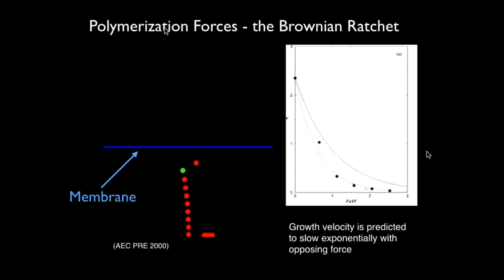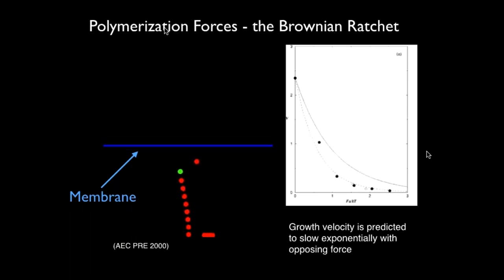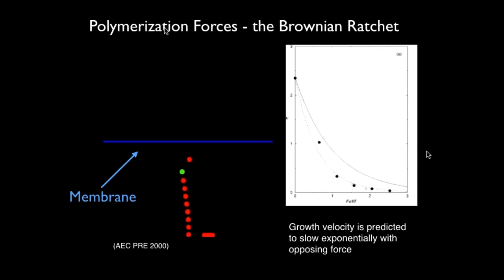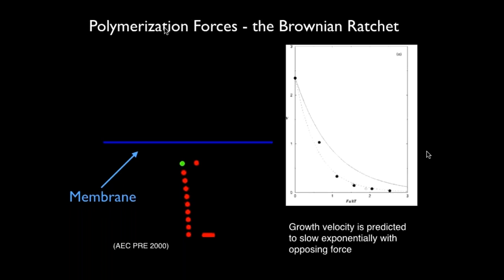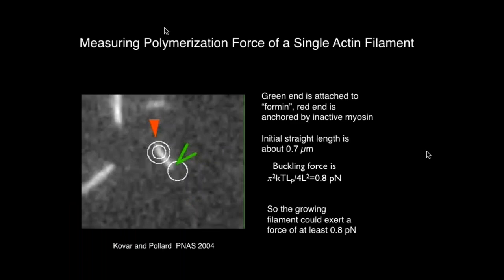The Brownian ratchet model predicts that if you push down on the membrane very hard, it will sit on top of the filament and not allow new subunits to come in, stopping polymerization. So the prediction — shown in these theory curves — is that with applied force the velocity should drop. Our first question is: how much force can we practically get out of this process?